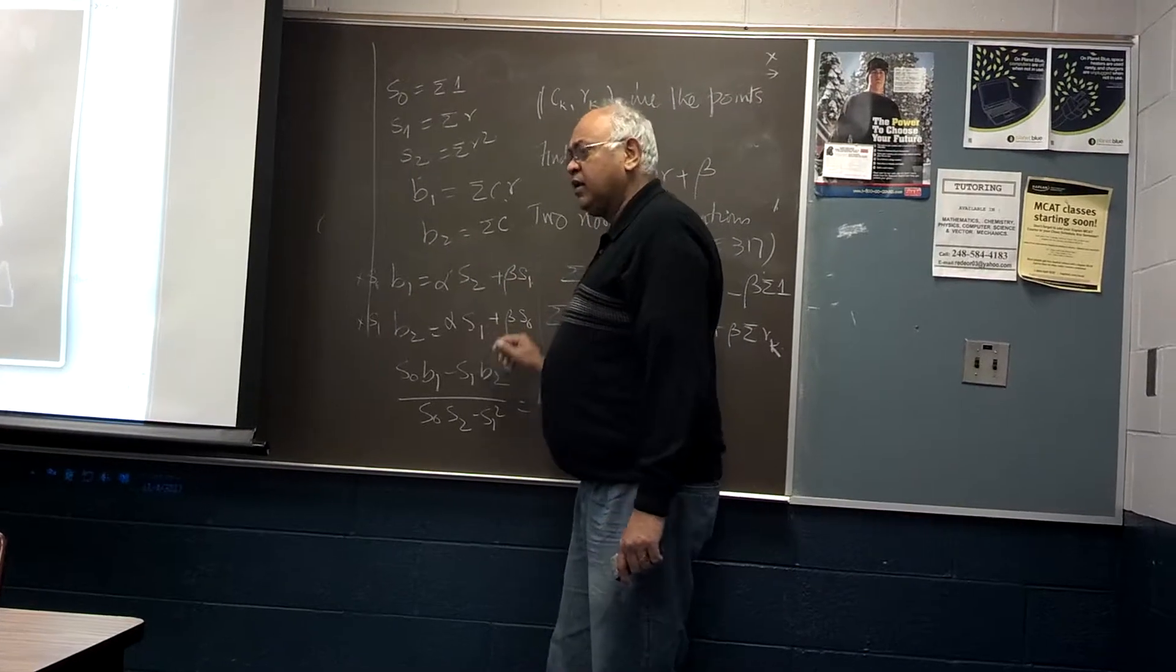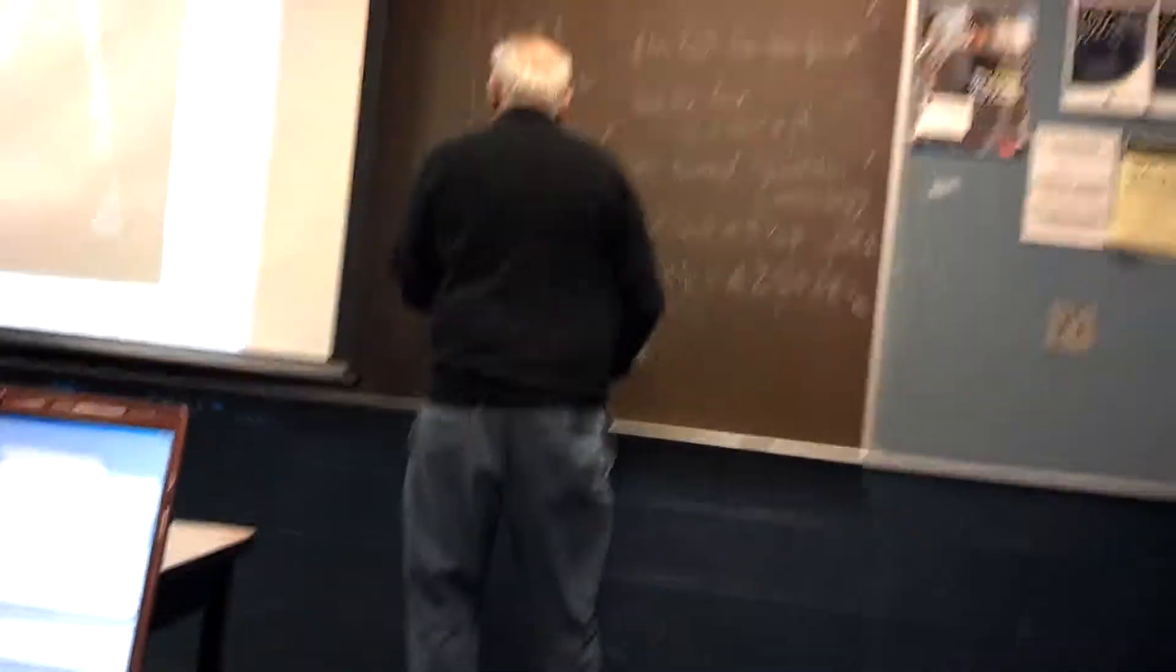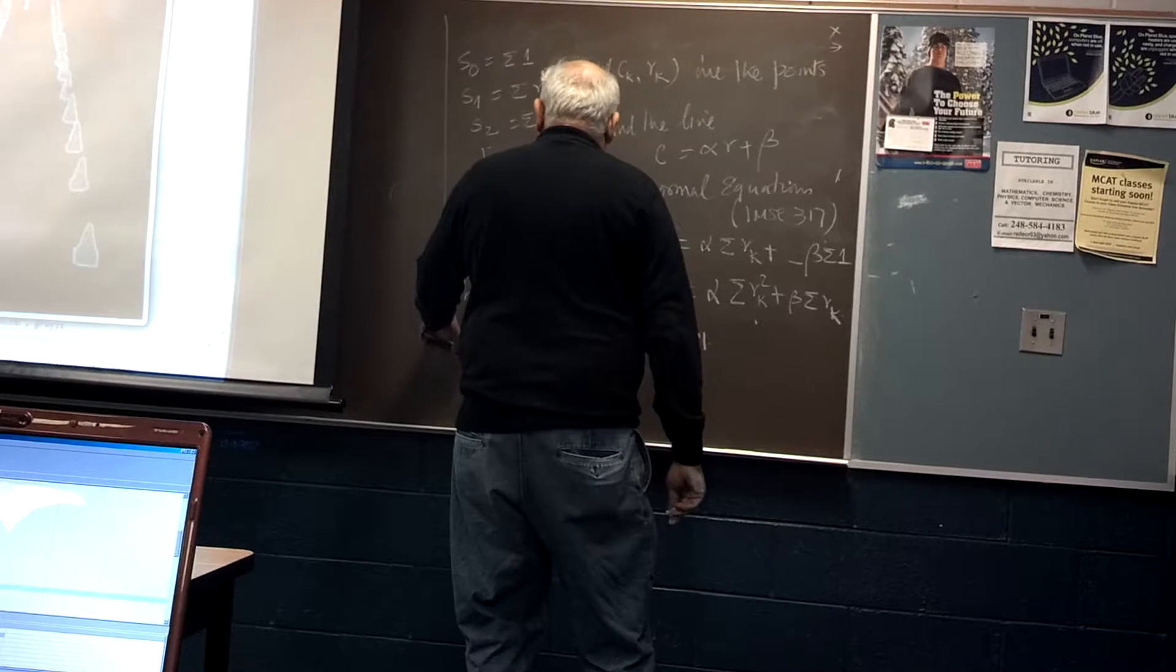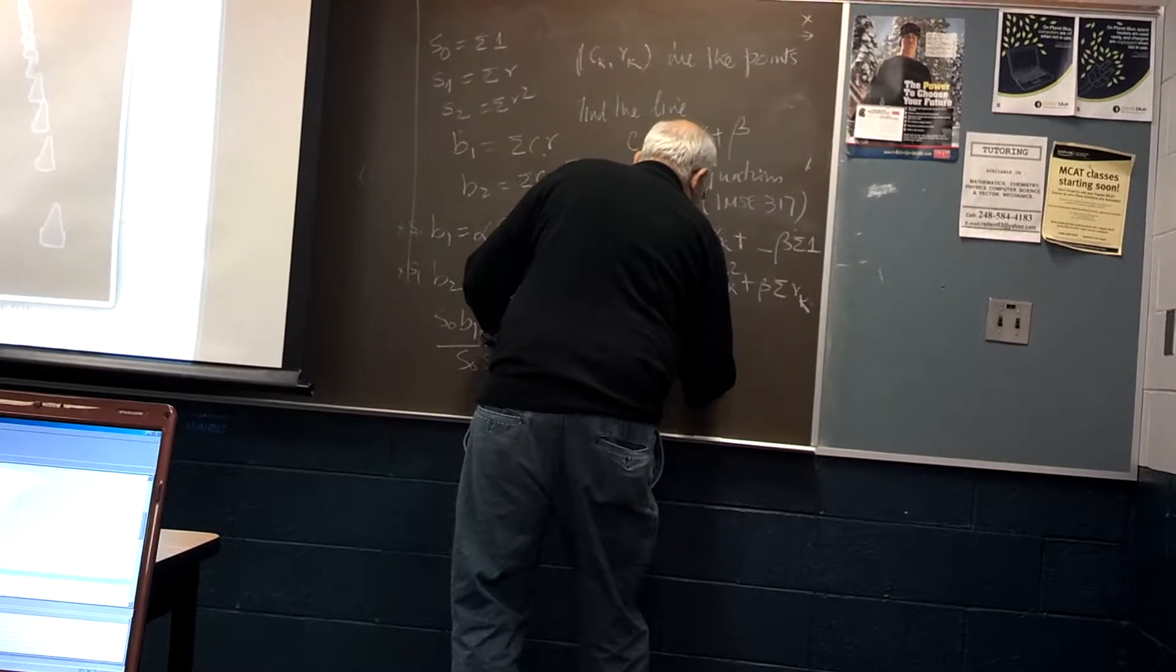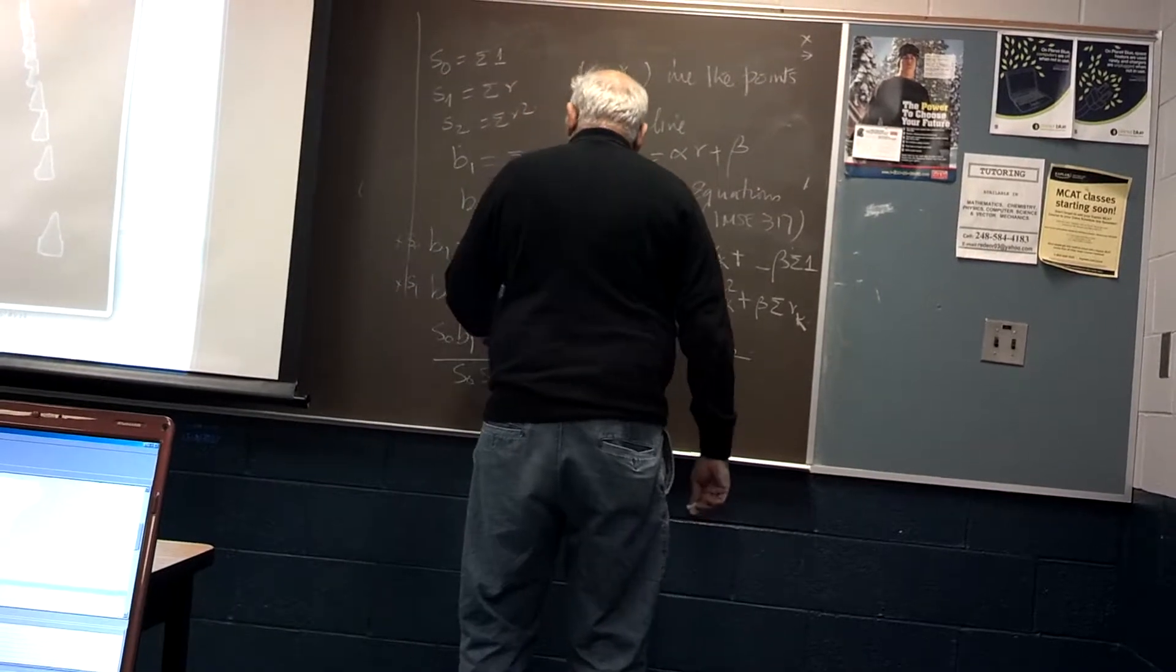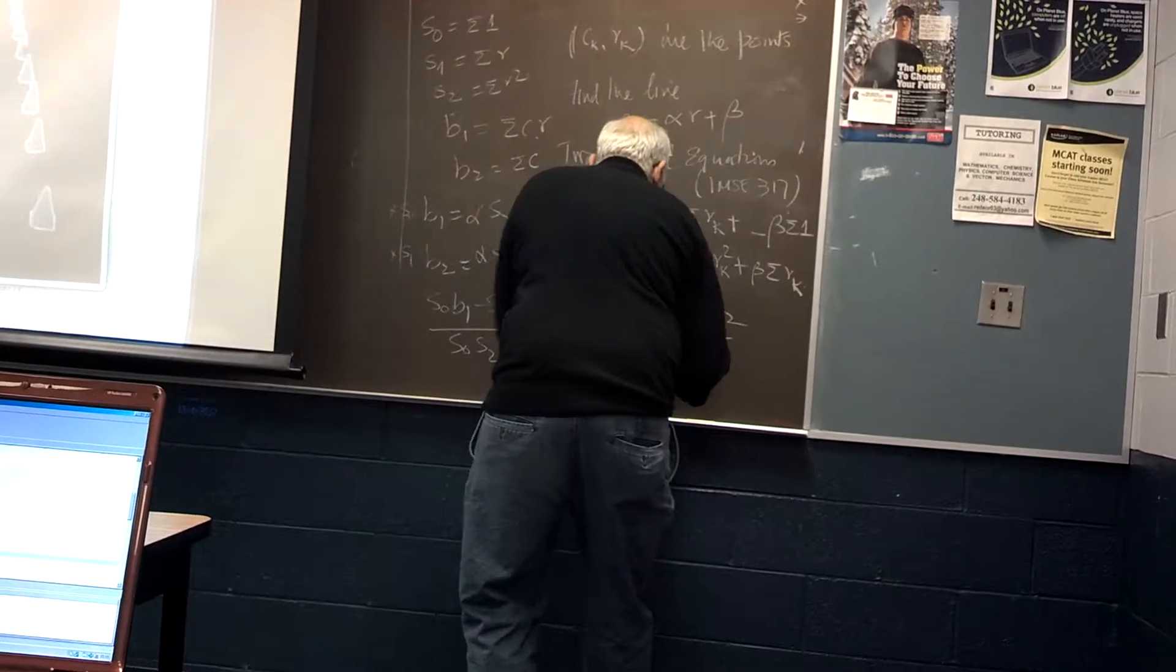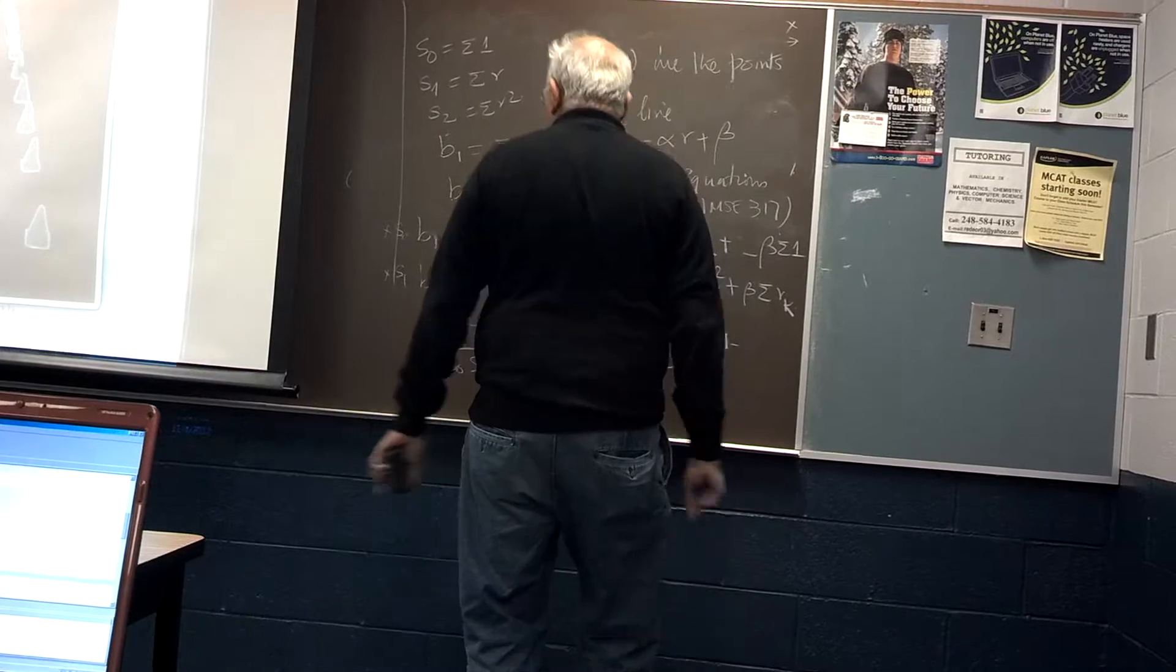Our two equations are two unknowns. So if I multiply this by S0, if I multiply this by S1... Let me just do it here. So S1 B1 minus S2 B1, multiply this by S2, and then you want to subtract, so that goes away, divided by S1 squared. Or maybe the other one.